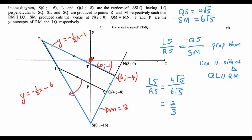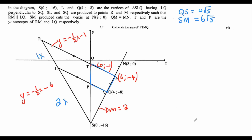The last question, for four marks, says calculate the area of PTMQ. What we can do is calculate the area of the big triangle and then subtract the area of the smaller triangle. We take the area of the big pink one and subtract the area of the little green one, and that will give us the area of the blue space — which is PTMQ.